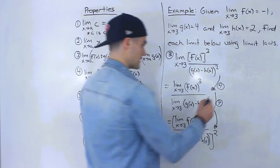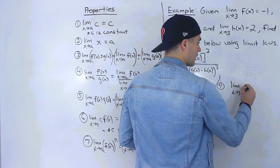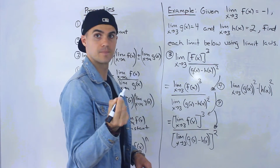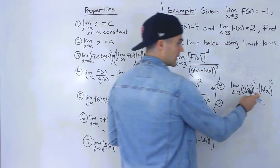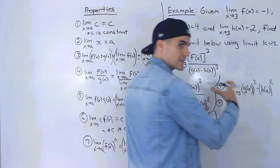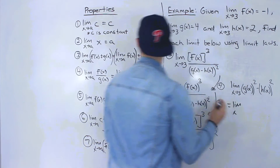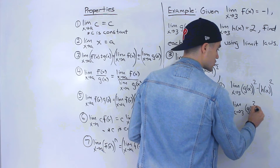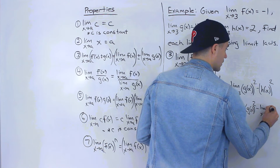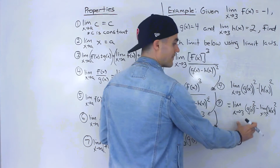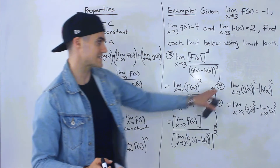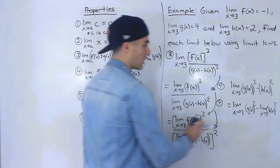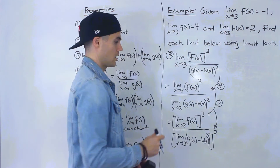As a note: if instead the expression had been written as the limit as x approaches 3 of g of x squared minus h of x squared, then we'd have to do the minus first because we're taking one function minus the other function — that's the outer operation. So we would apply law number 3 first, splitting into two separate limits, then apply law number 7 to each. But in our problem the bracket with the exponent outside meant we apply the exponent law first. Just be careful with these types of questions.